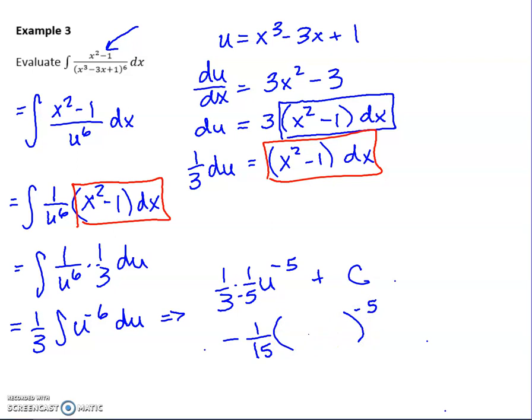So I've got negative 1/15 u to the negative 5th, but I'm gonna replace my u with this, and then as a last step because of the negative exponent I'm gonna go ahead and write it like this and then of course I'll sneak a plus C in there.